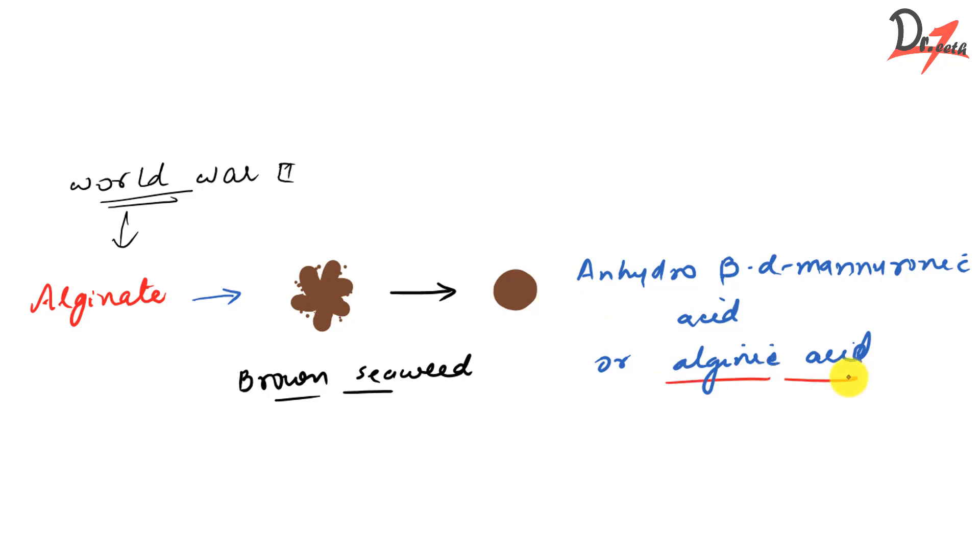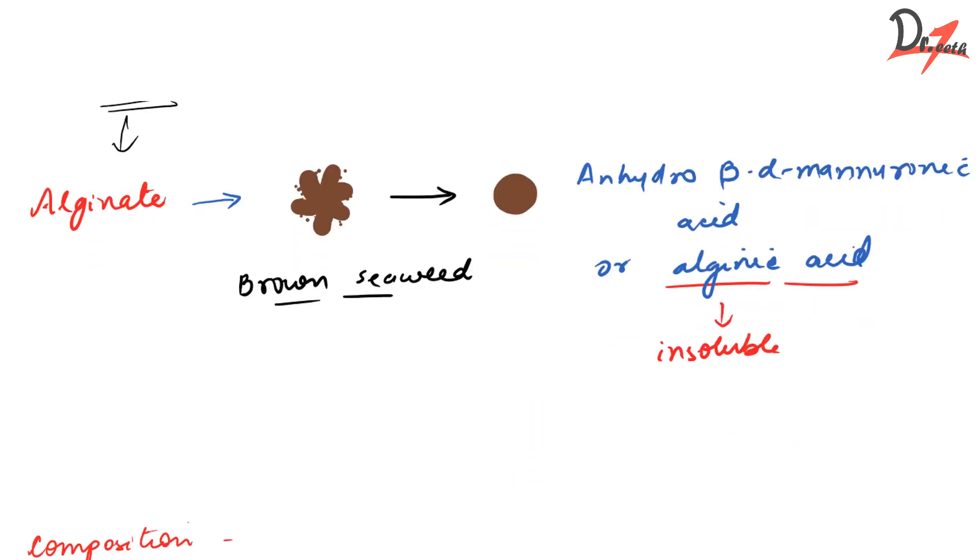Now this alginic acid is insoluble in water. So how will you actually mix it with water and get that thick consistency product to take the impression? For that, we use the salts of alginic acid. We use sodium or potassium salts. So to make it soluble, we are using sodium, potassium salts of alginic acid.